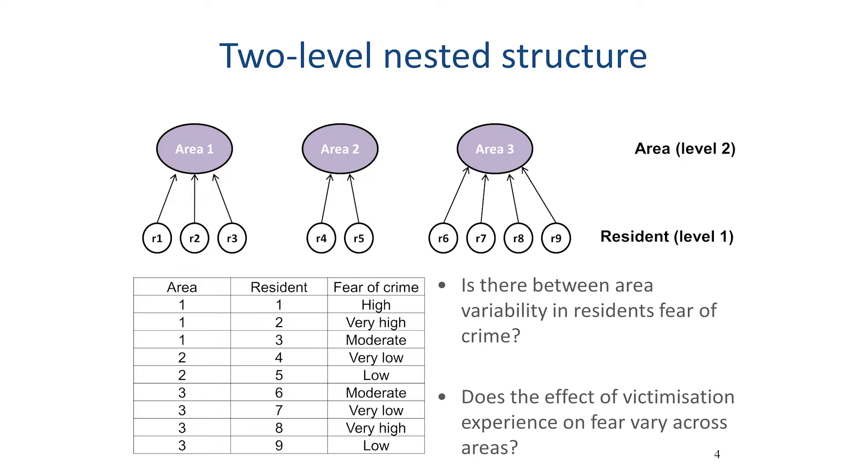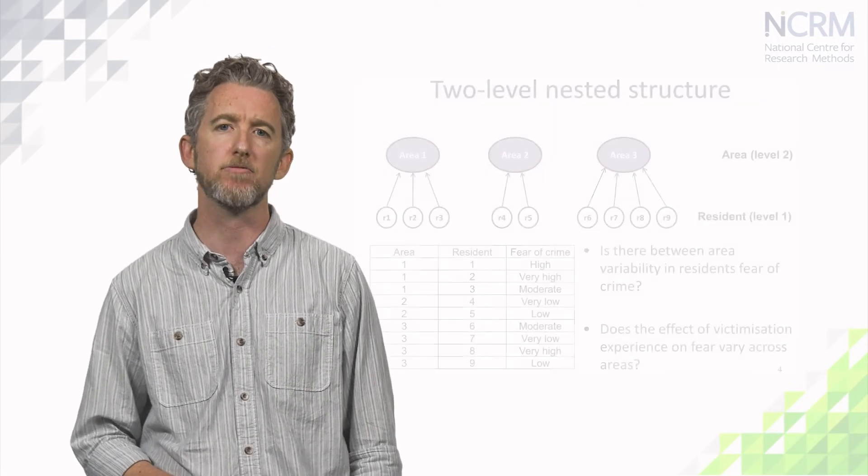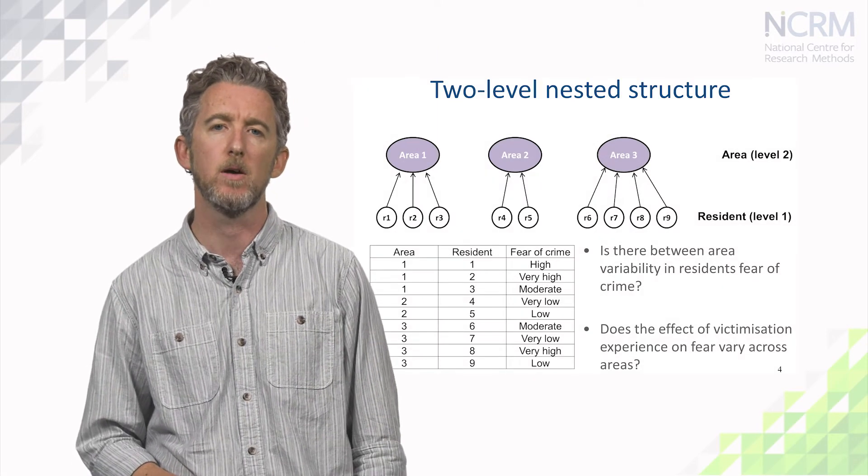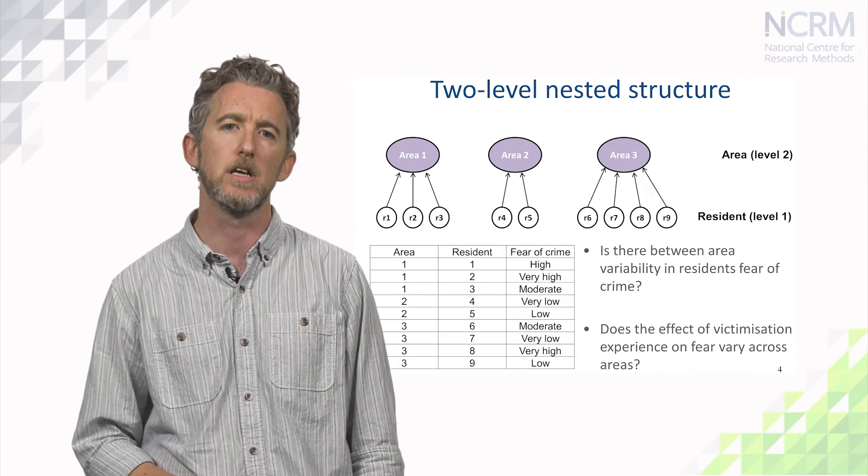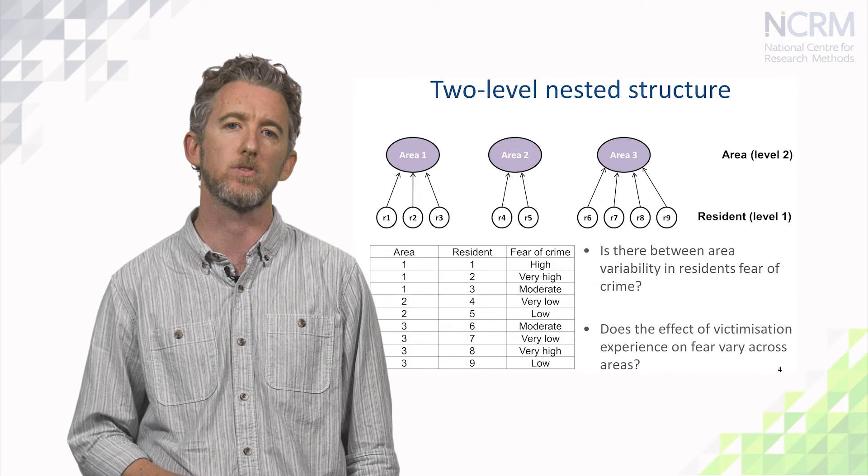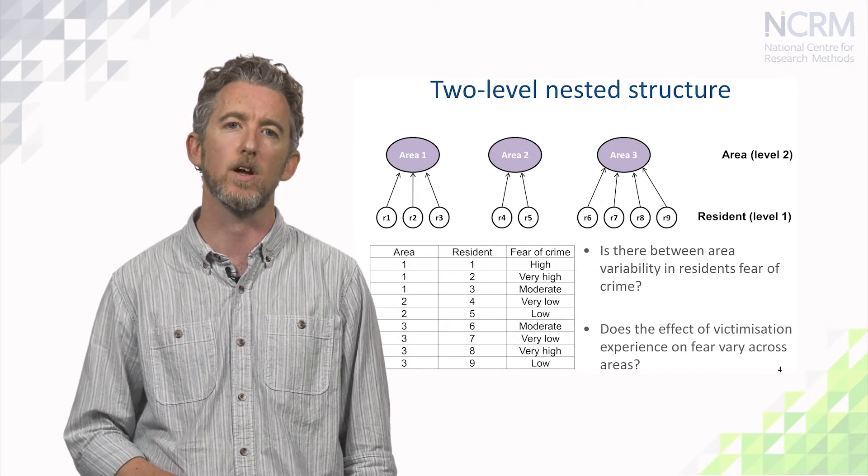In addition, we may have reason to expect that residents of the same area may have more similar outcomes on average than residents of different areas, perhaps reflecting shared social experiences, physical proximity or neighbourhood networks. We may want to examine differences between units at level one, but also consider the possibility of differences across level two and how belonging to a particular level two unit may shape the responses at level one.